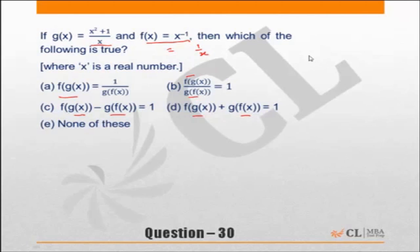Now if x is equal to 1, g(1) will be x squared plus 1 by 1, which means 1 plus 1, 2 by 1, which is equal to 2. And f(1) is equal to 1 by x, which is nothing but 1.